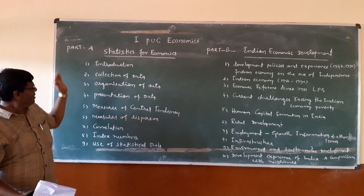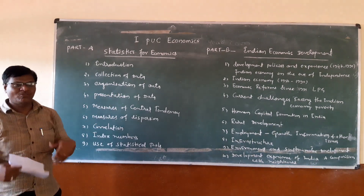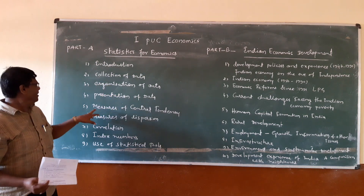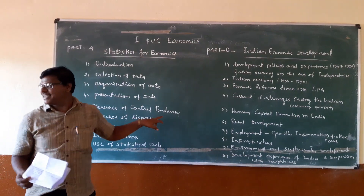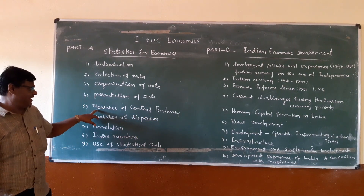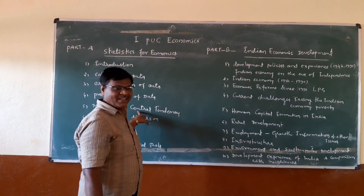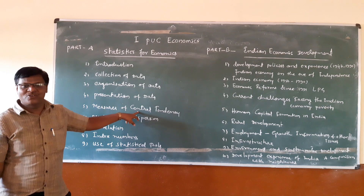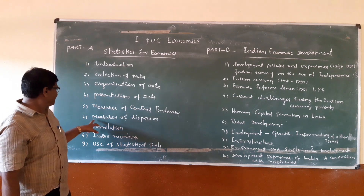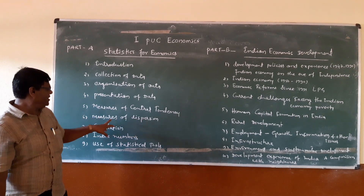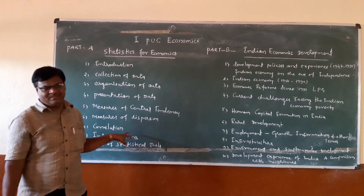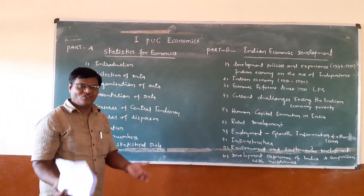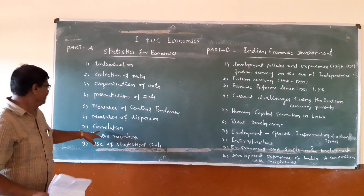Number four is Presentation of Data — how to present the data in primary, secondary, and other forms. We have to present data using measures such as mode and other methods included in the chapter. Number six is Measures of Dispersion. Number seven chapter is Correlation, which is also a very important chapter. In this chapter you have to study positive correlation, negative correlation, and the meaning of correlation.